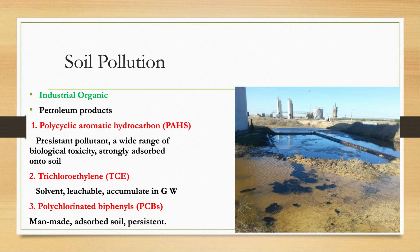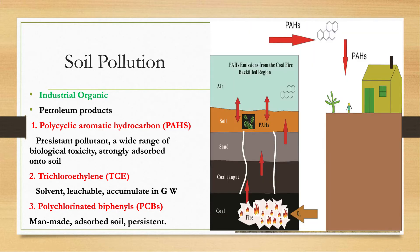Industrial organic pollutants and pesticide organic pollutants include polycyclic aromatic hydrocarbons (PAH), which are petroleum products used for fuel purposes. PAHs are persistent pollutants having a wide range of biological toxicity. Persistent pollutants are those that are resistant to degradation in the environment.